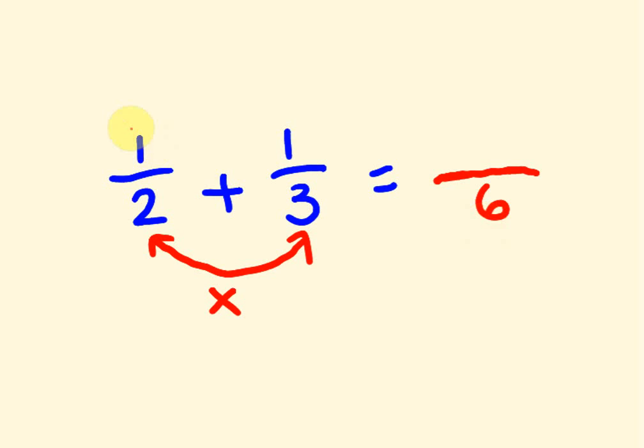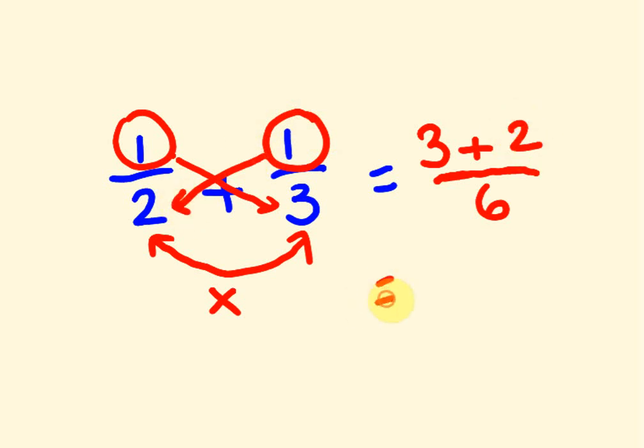And then what we do is we start at the top left here, and we multiply this number by the diagonal here. So it's diagonal bottom number here. So 1 times 3 is 3. We use the same sign, which is a plus. Then we go over to the right number here at the top, and we multiply this number by this number. 1 times 2 is 2. Equals. 3 plus 2 is 5. And we've got the bottom number as a 6. And there you go. We've got 5/6. That's the easiest way of doing these.